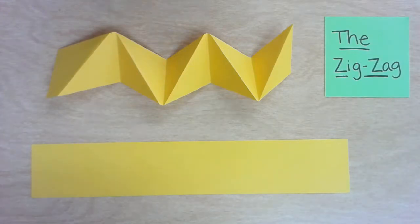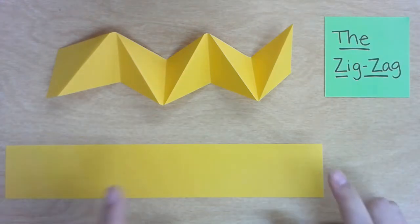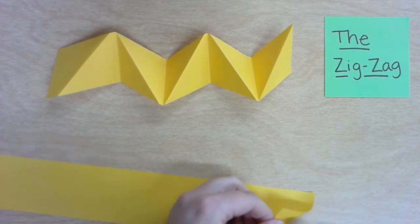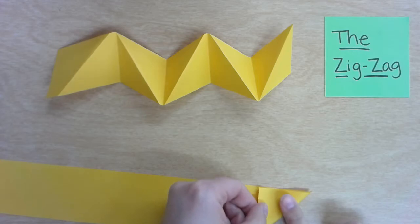This one is my personal favorite. It is called the zigzag, or at least that's what I call it. All you need to do is take your strip of paper, take a corner of it, and fold it towards